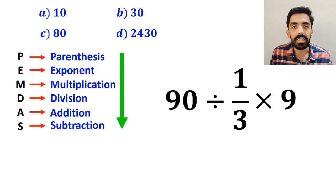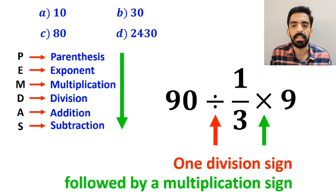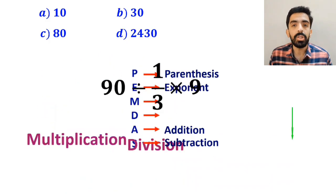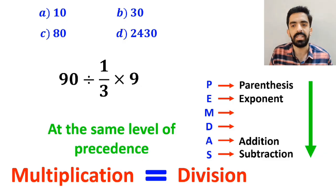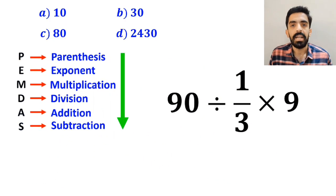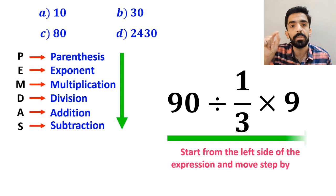Alright, as you can see on the screen, in this expression we have one division sign followed by a multiplication sign. It's very important to note that multiplication and division are at the same level of precedence. In this case, the best thing to do is to start from the left side of the expression and move step by step toward the right.